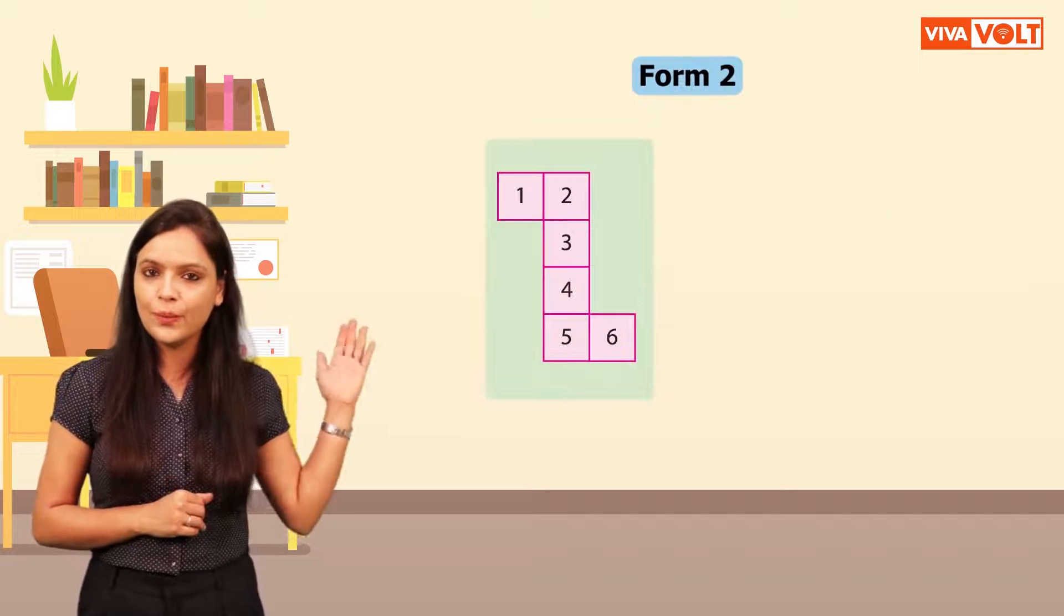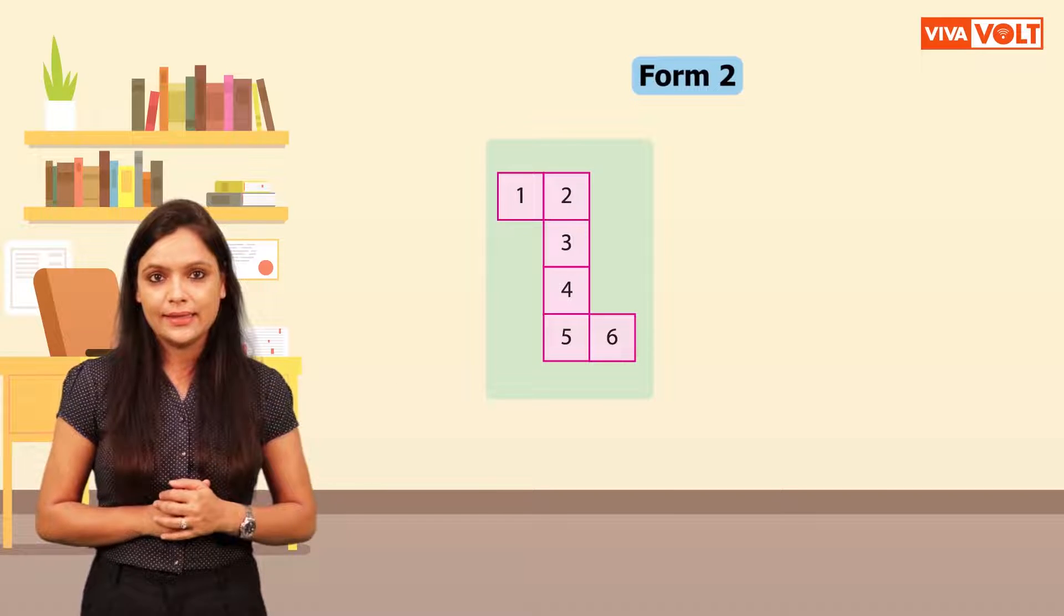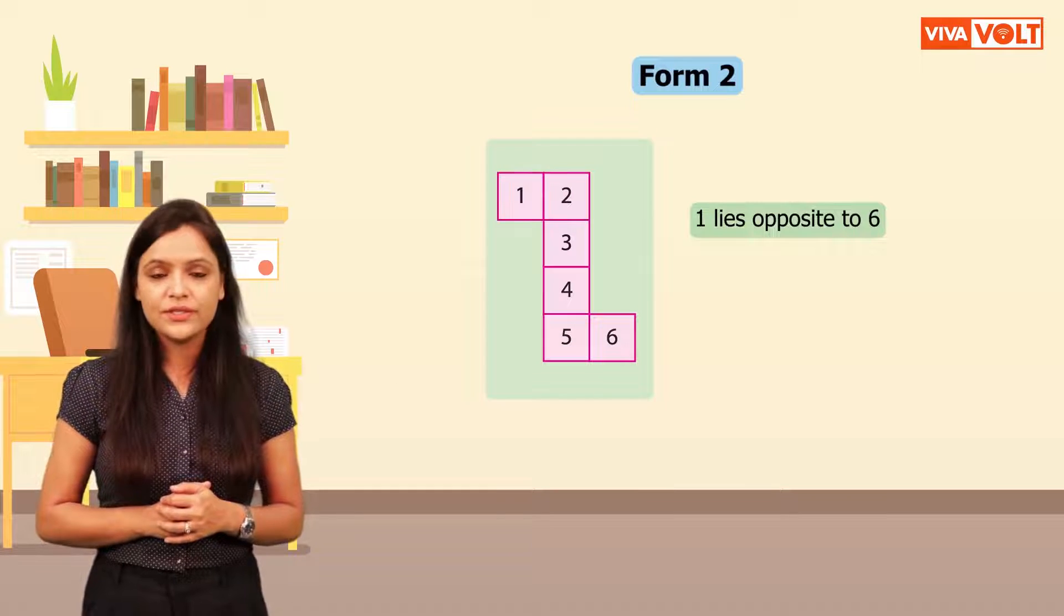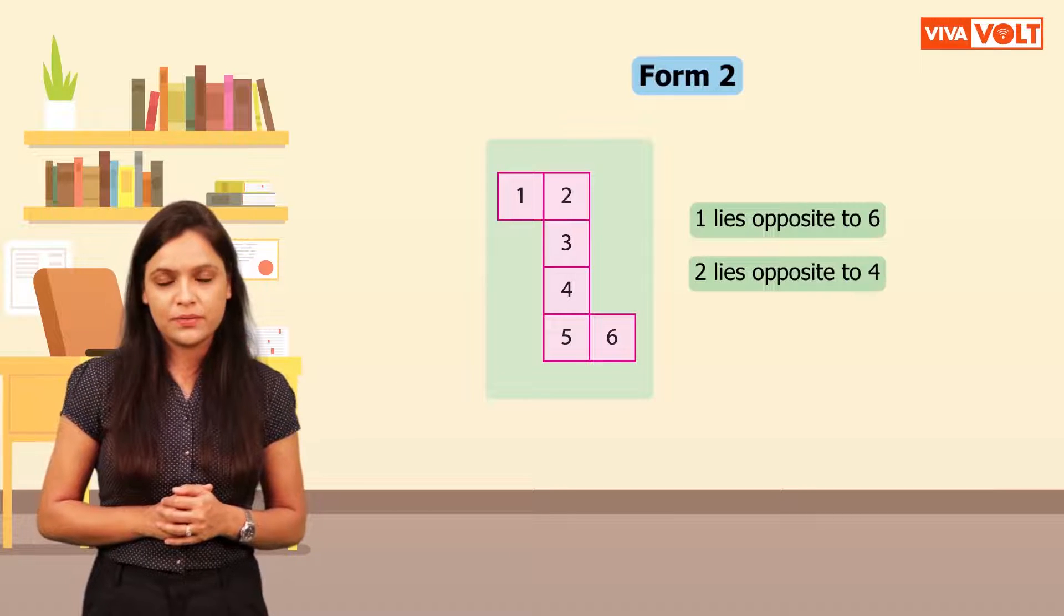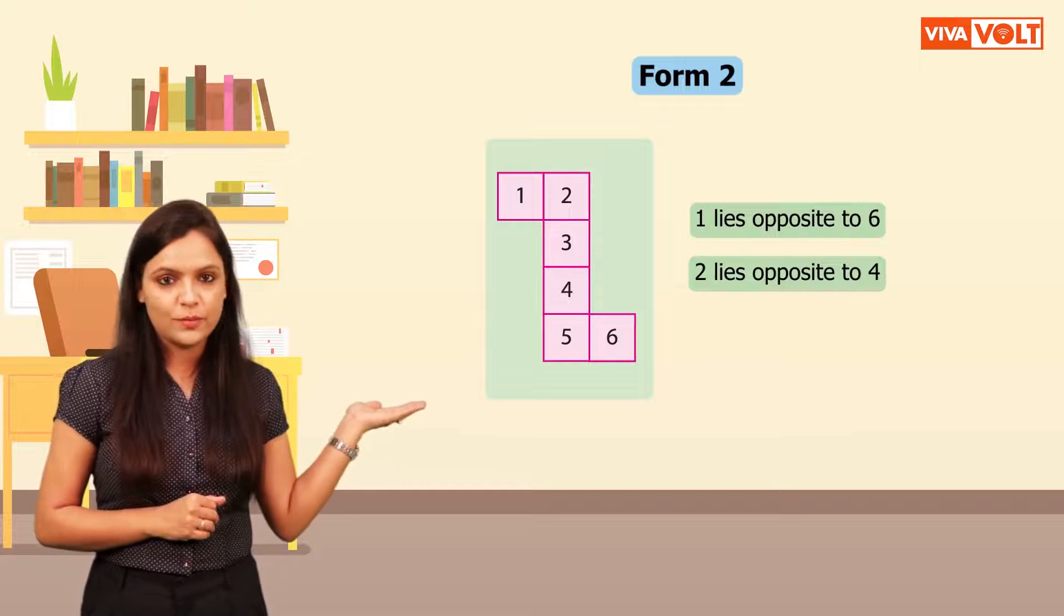Form 2 will look like this. In this case, 1 lies opposite to 6, 2 lies opposite to 4, 3 lies opposite to 5.